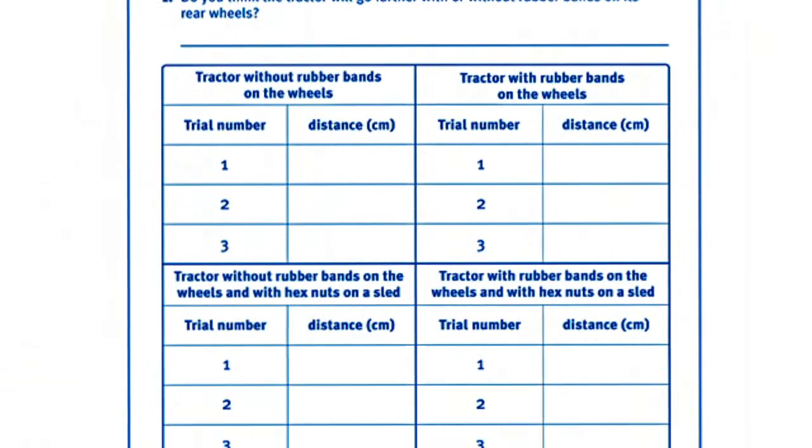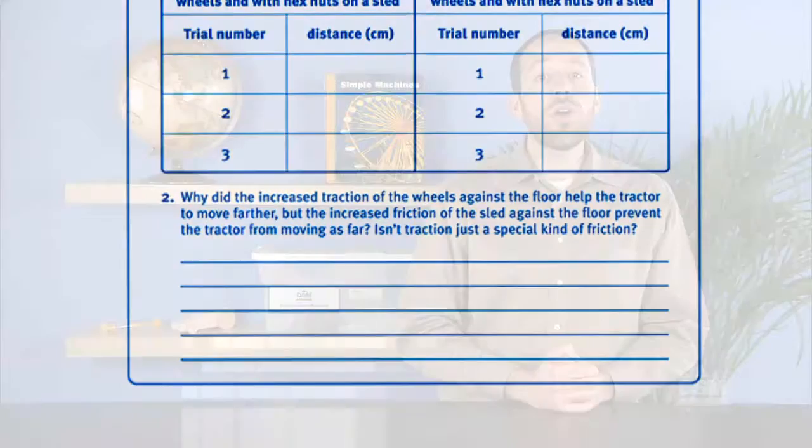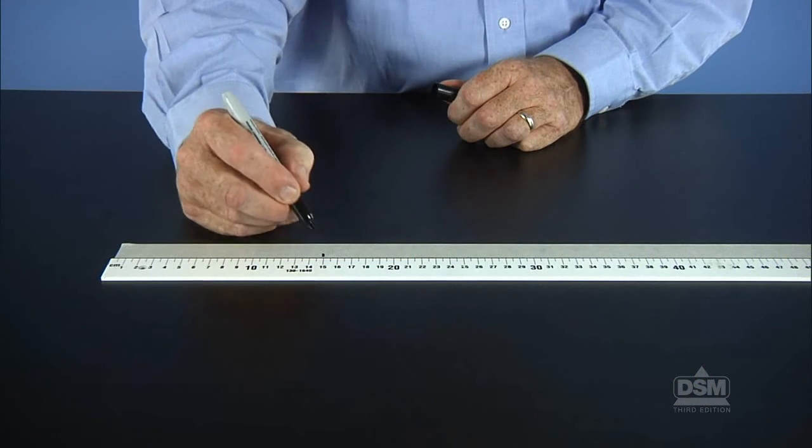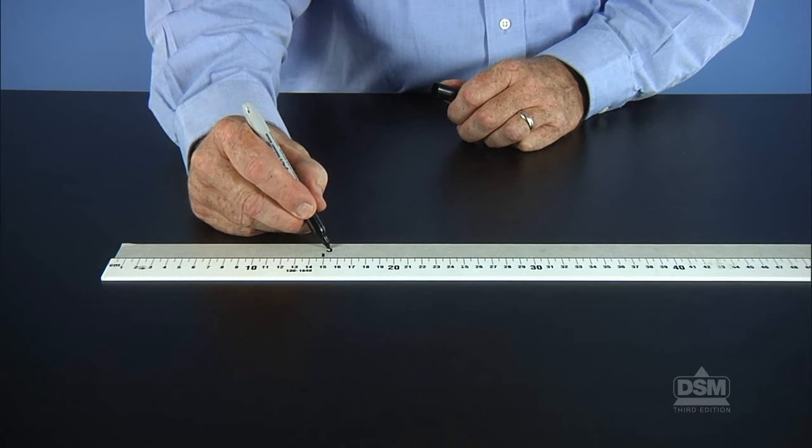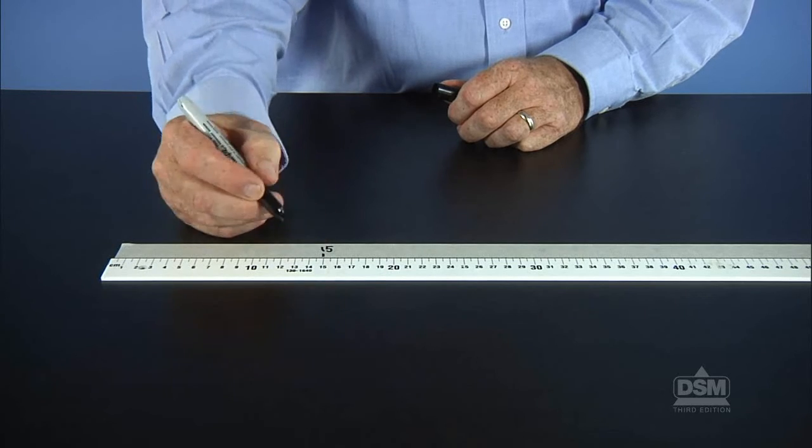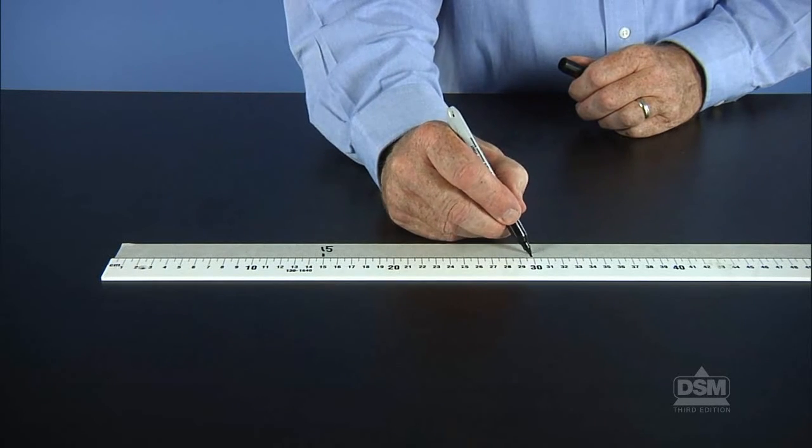To prepare for the activity, make a copy of Activity Sheet Six for each student. Clear a large area on the floor for the students to conduct their tractor trials and establish a starting line using a piece of masking tape. Mark off a distance of 1.5 meters in increments of 15 centimeters.